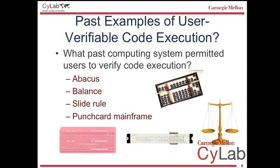What are some examples of user-verifiable code execution that might serve as a model for us? The abacus, the balance, the slide rule, and even punch card mainframes are all devices with very tangible human feedback. When you're operating one of these devices, you can see it, hear it, feel it — you might be able to determine that something didn't do what you expected. And if you load the wrong punch cards, it's going to make a different sound when that program executes.